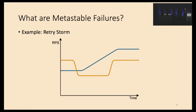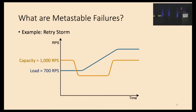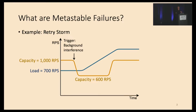What are metastable failures in the first place? Let's take a closer look at an example of a retry storm. Suppose you have a database with capacity of 1,000 requests per second, and your initial load is 700 requests per second. All of a sudden, you have an abnormal trigger, such as background interference introduced by backup jobs. Your capacity temporarily decreased to 600 requests per second, and now your system is overloaded.